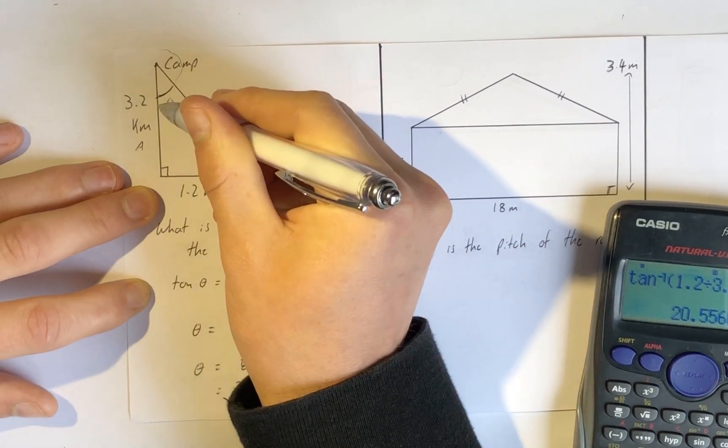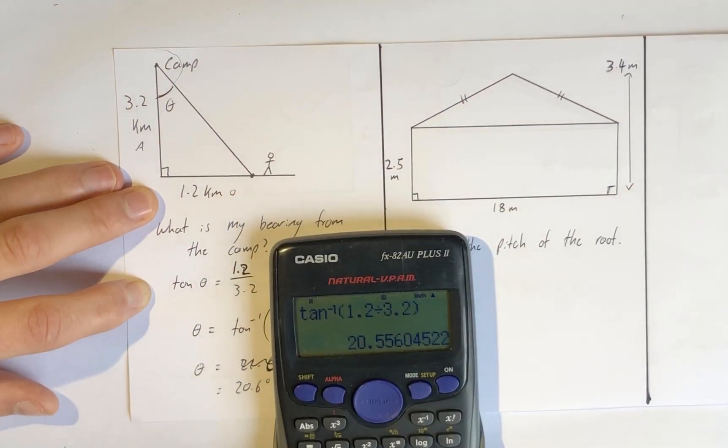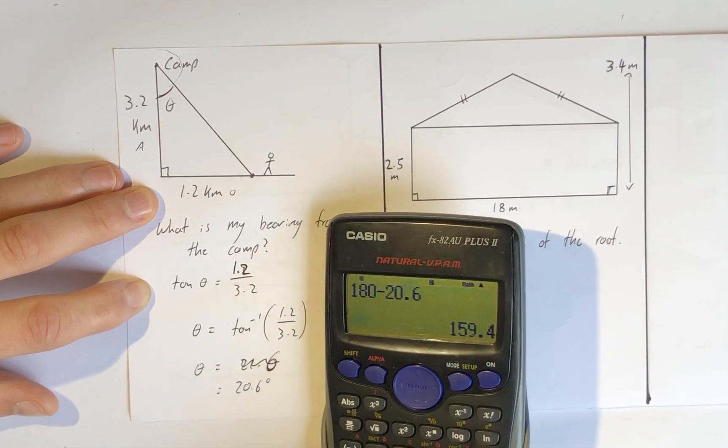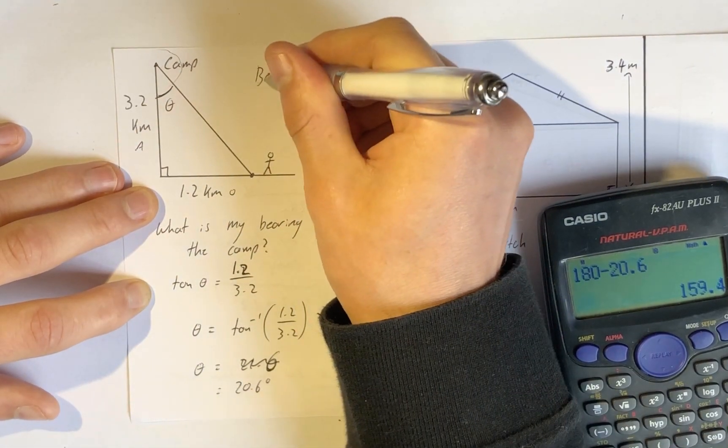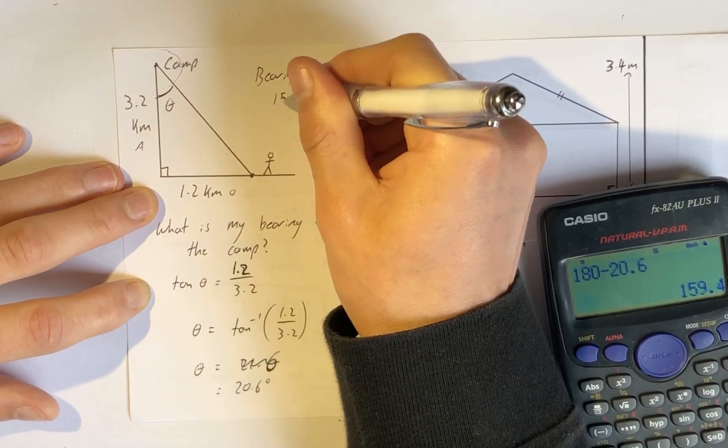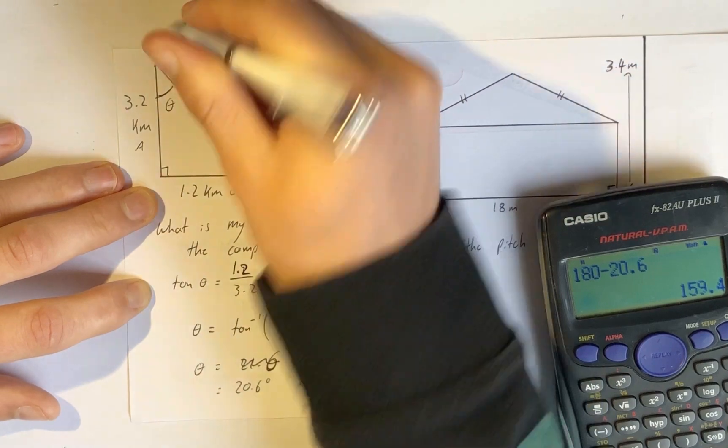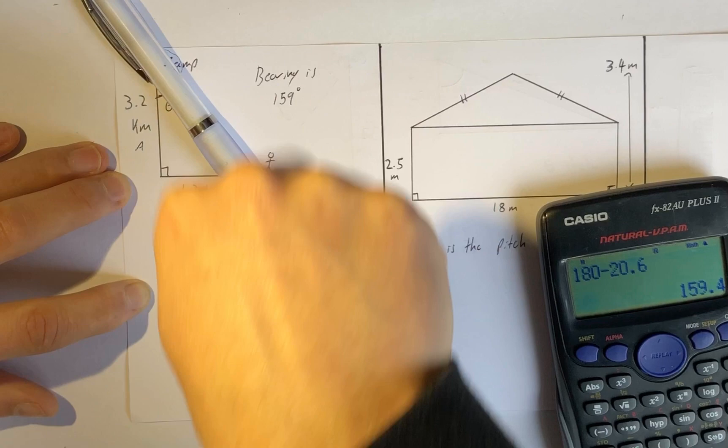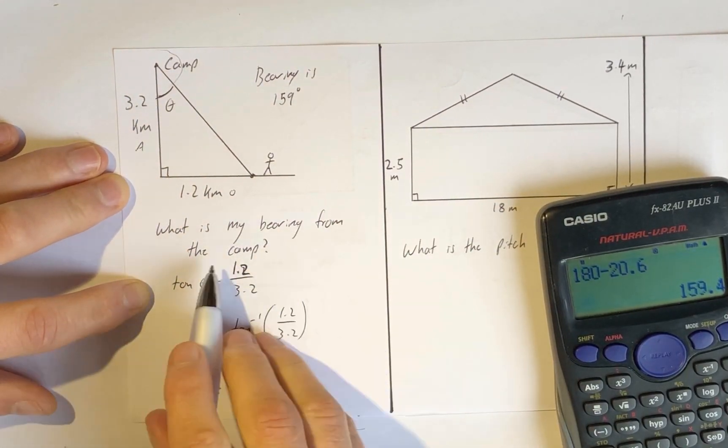There's the angle we need to take away from 180 so that we know that bearing. 180 minus 20.6, so the bearing is 159 degrees. If we were facing north we would have to turn 159 degrees clockwise and then go in that direction to meet up with me from the camp.